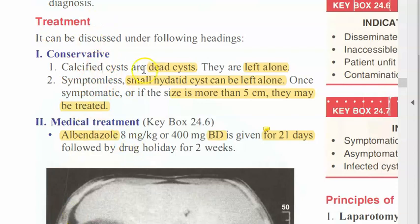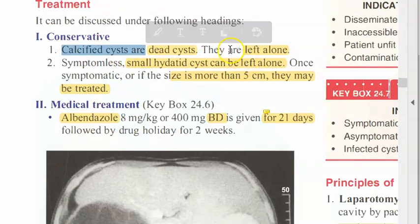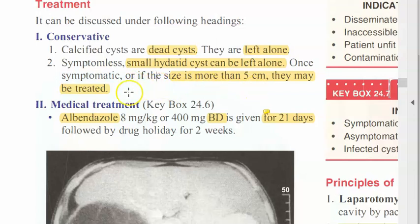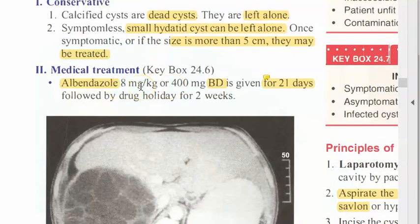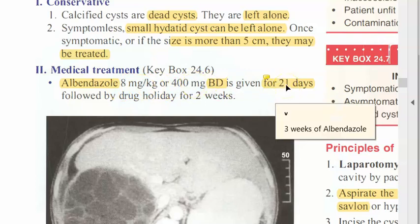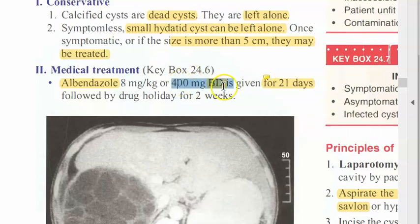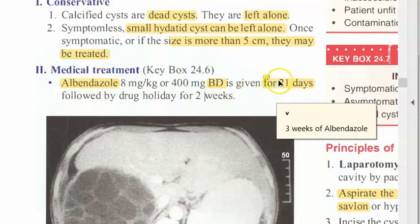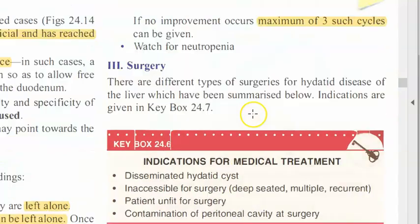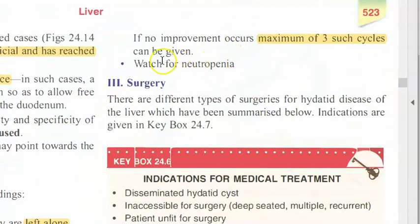Coming to treatment: if it is a dead cyst you don't have to do anything. If it is symptomless or small, it can be left alone. If symptomatic or large, you need to treat it. Medical treatment is albendazole — a worm killer — given as 400 mg twice daily for 21 days, then a two-week break, then again 21 days, for a maximum of three such cycles. Watch for neutropenia during this treatment.